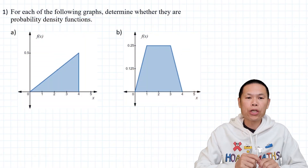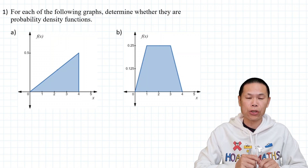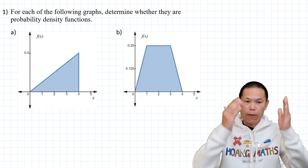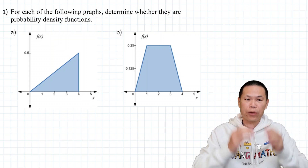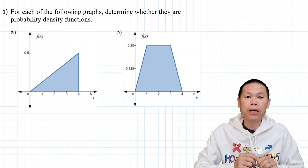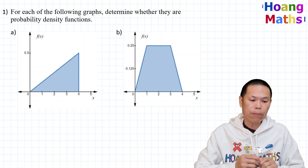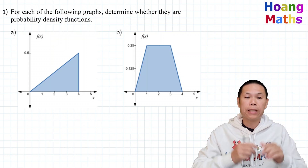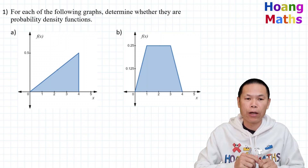First one: for each of the following graphs, determine whether they are probability density functions. We need to know that for probability density functions, the area under the curve must be equal to one. To work out whether they are probability density functions or not, we just work out the area under the curve.